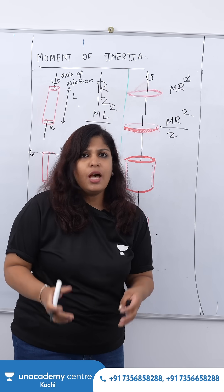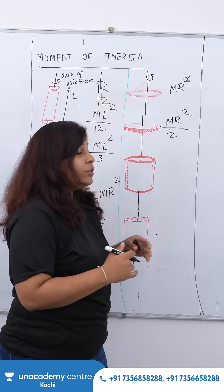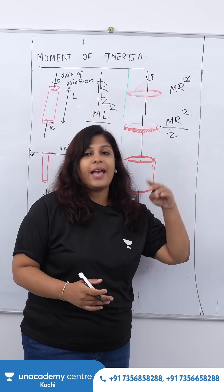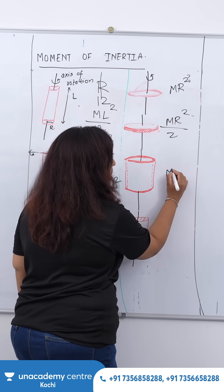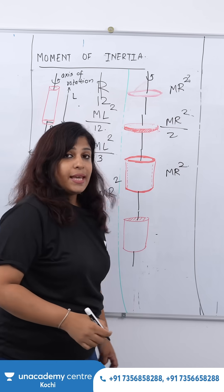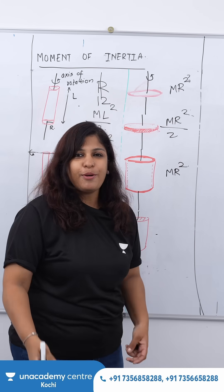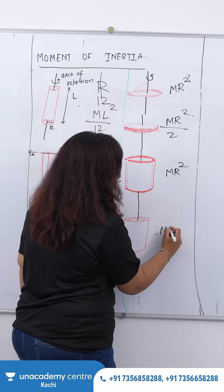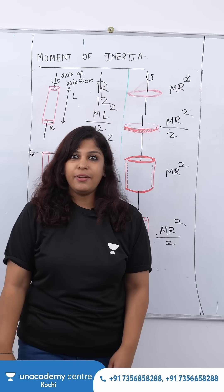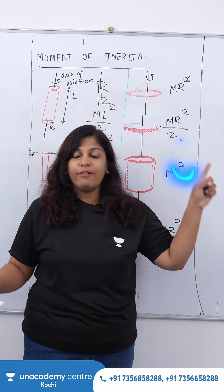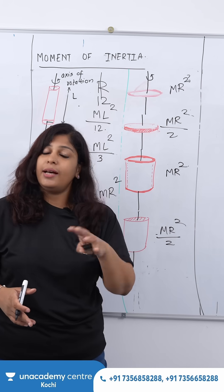If you stack up a lot of rings, what is formed? It's a hollow cylinder. So the moment of inertia of a ring and a hollow cylinder are the same: mr². At the same time, if you stack up a lot of discs, the moment of inertia is mr² / 2 — same as that of the disc.